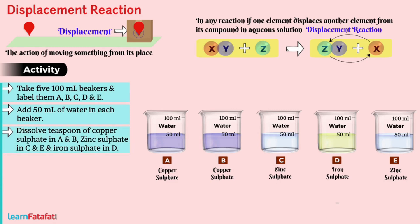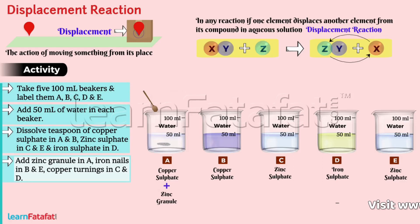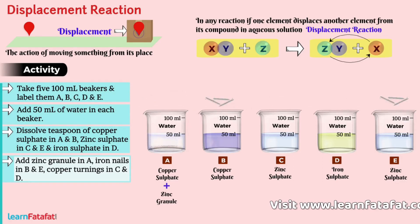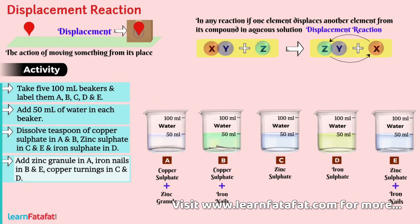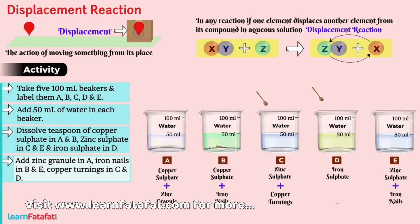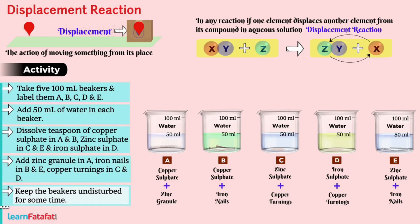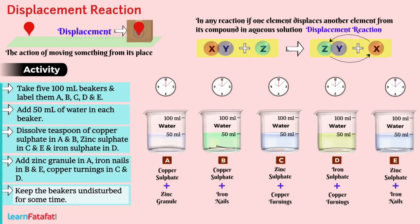Step 4: Add zinc granules in A, iron nails in B and E, and copper turnings in C and D. Step 5: Keep the beakers undisturbed for some time. Step 6: What do you observe?